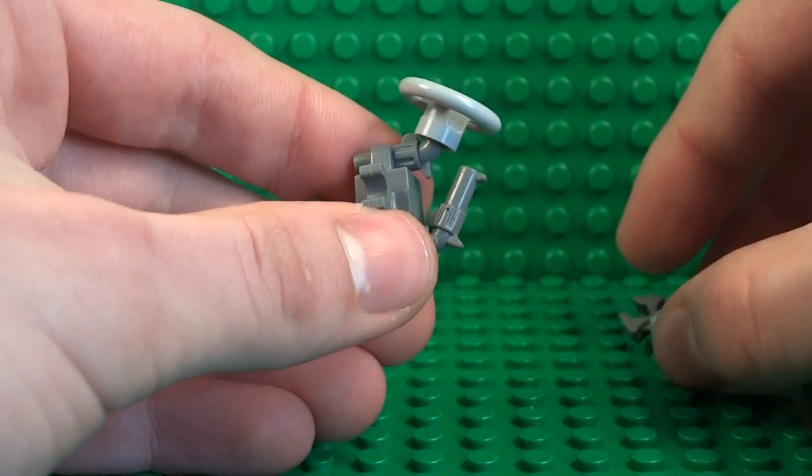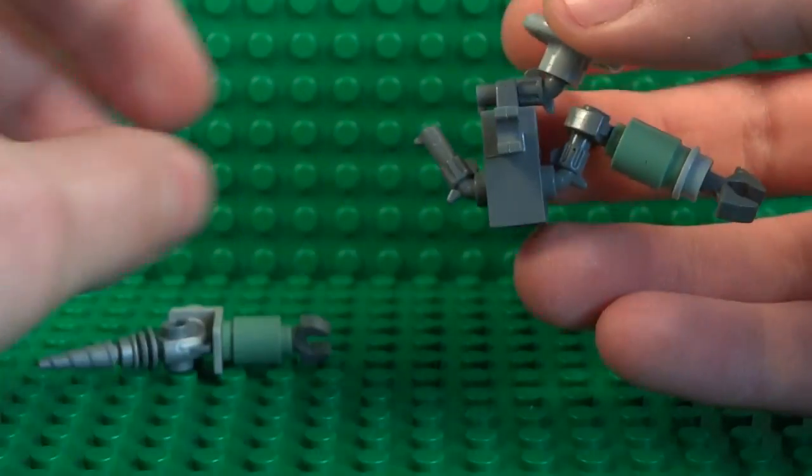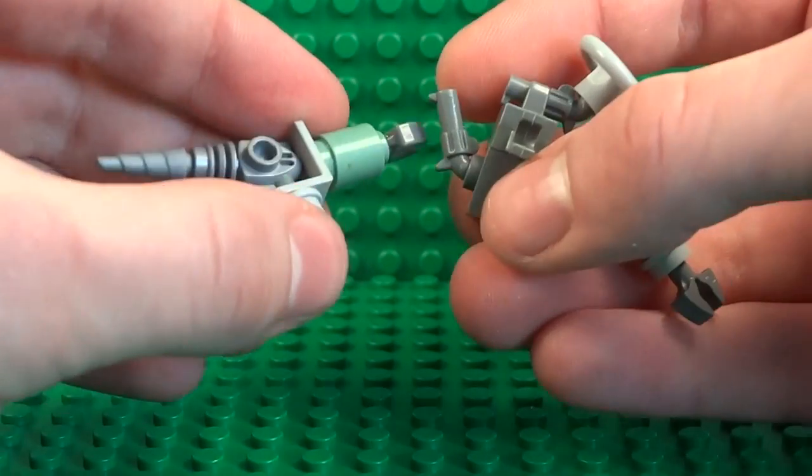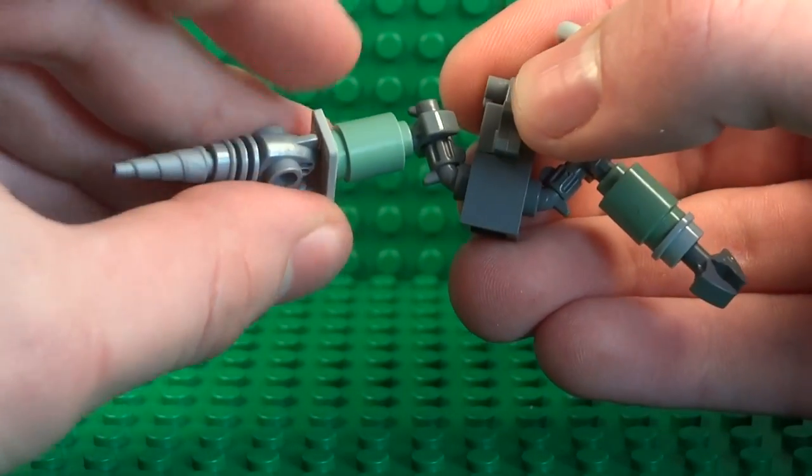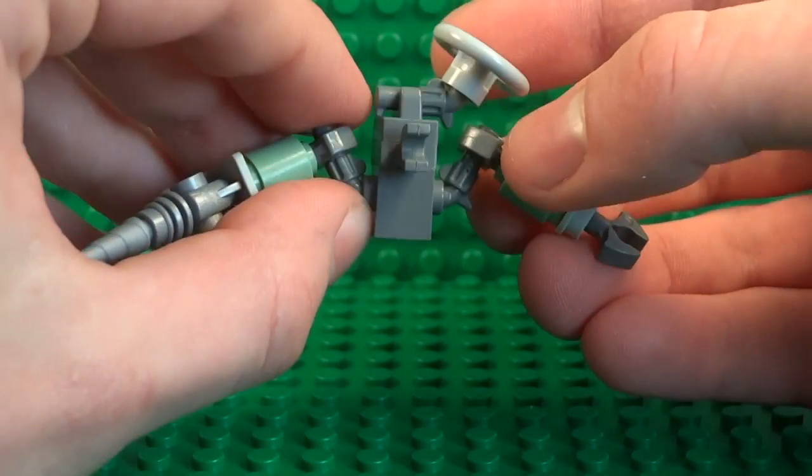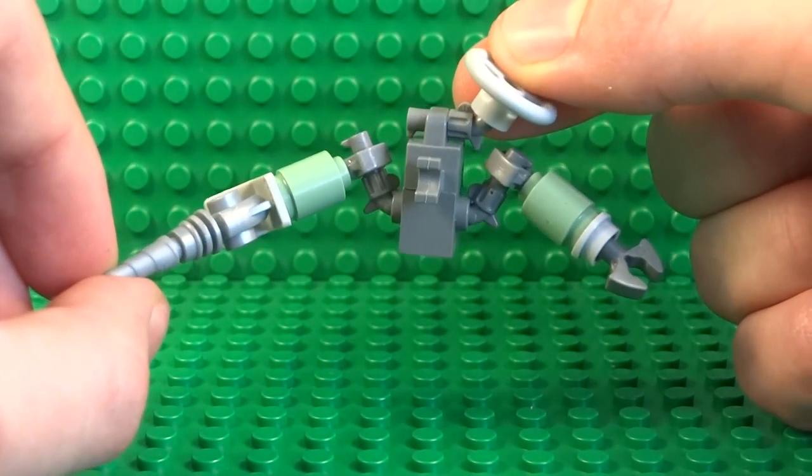And from here you can attach your two arms. And obviously you can position these a bit better once we have the completed Big Daddy all formed, but you can see how the clips will end just attach towards the arms. And you can start to see how all three pieces will come together to form the Big Daddy.